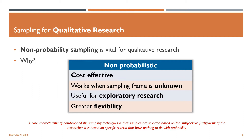In this video, we will look at non-probability sampling that is vital in qualitative research. Non-probabilistic sampling represents a group of sampling techniques that help researchers to select units from a population that they are interested in studying. However, a core characteristic of non-probability sampling techniques is that samples are selected based on the subjective judgement of the researcher. It is based on specific criteria that have nothing to do with probability.